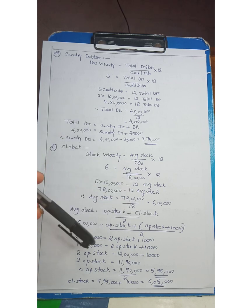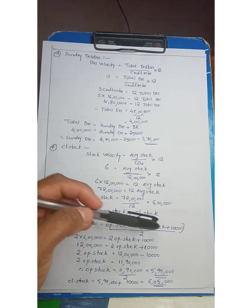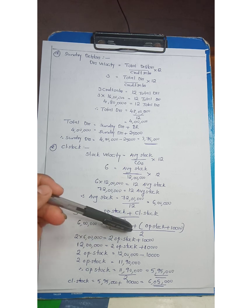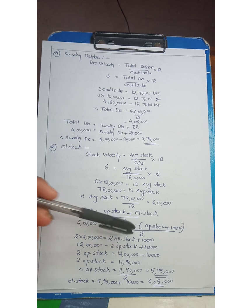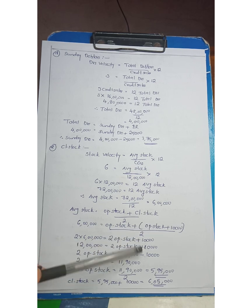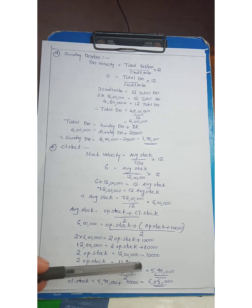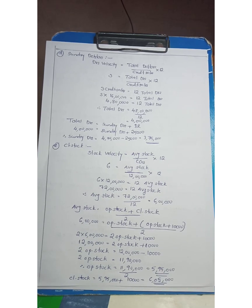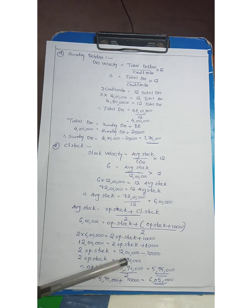The closing stock is determined as opening stock plus 10,000 rupees. So 2 into 6 lakh equals 12 lakh. 12 lakh equals 2 opening stock plus opening stock plus 10,000. Therefore 12 lakh equals 2 opening stock plus 10,000. So 2 opening stock equals 12 lakh minus 10,000, which equals 11,90,000. Therefore opening stock equals 11,90,000 divided by 2, which is 5,95,000. Therefore the closing stock equals 5,95,000 plus 10,000, which equals 6,05,000.